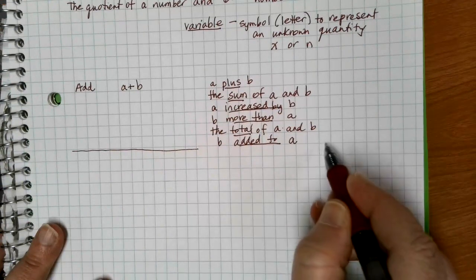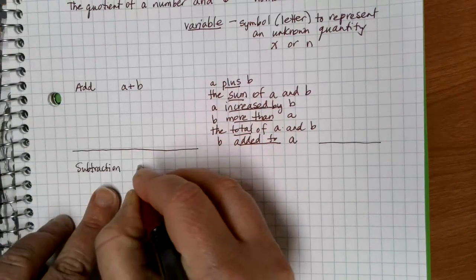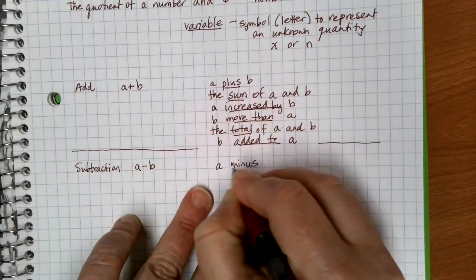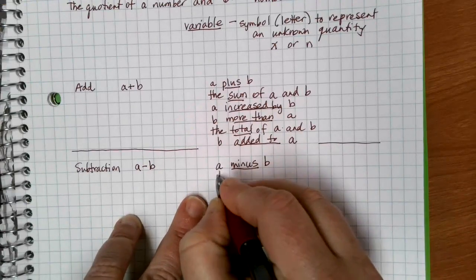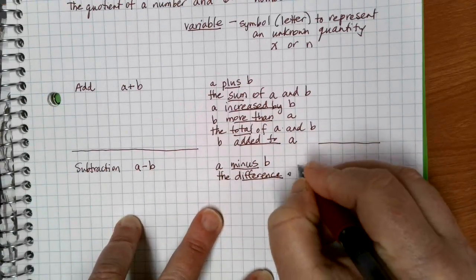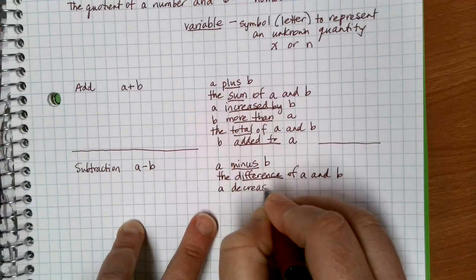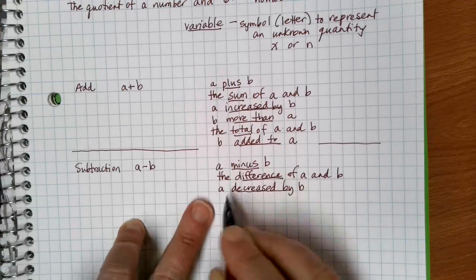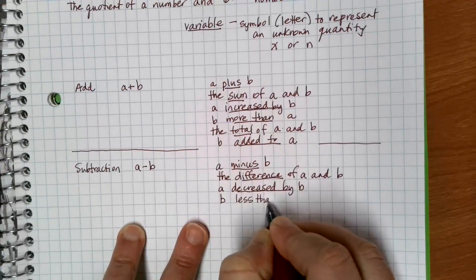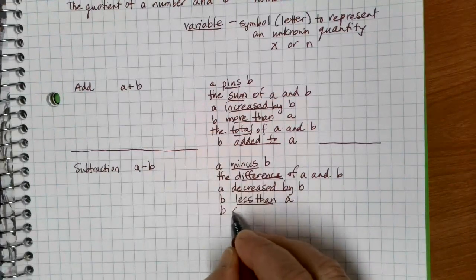For subtraction — say a minus b — we can use the word minus, or difference ('the difference of or between a and b'), decreased by ('a decreased by b'), less than ('b less than a'), or subtracted from ('b subtracted from a').